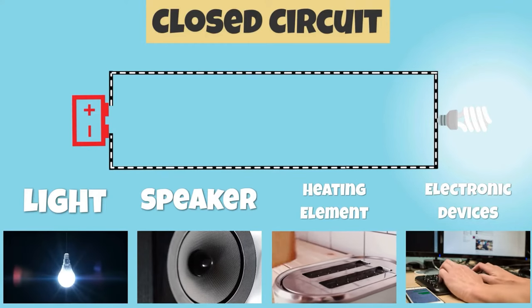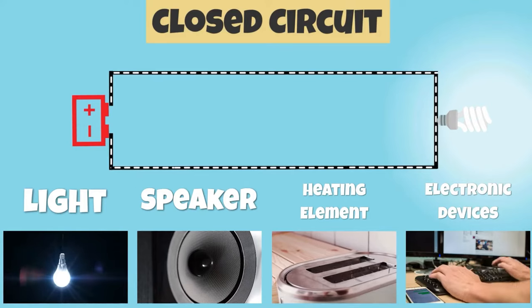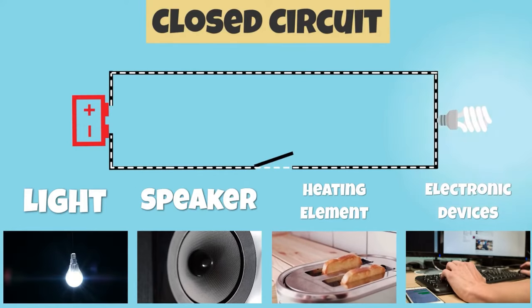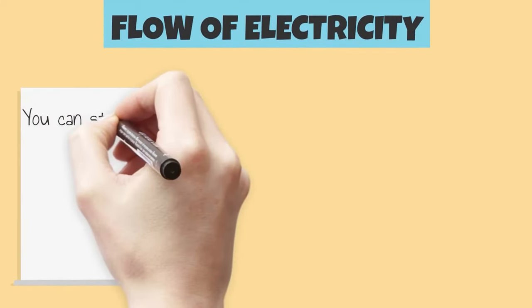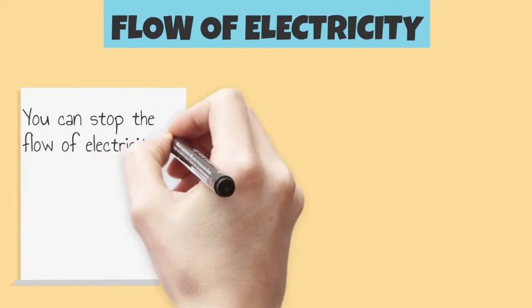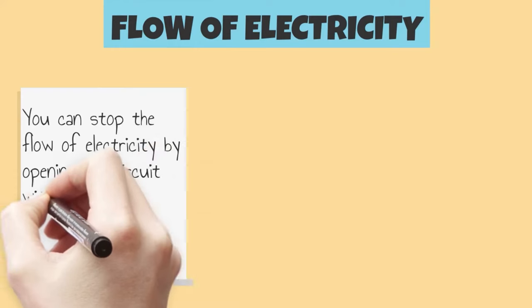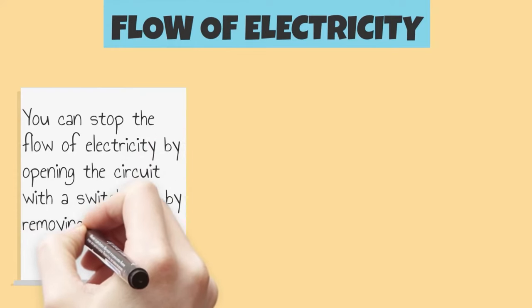Electrical energy continuously flows through this path and stops only when a circuit is broken or opened. You can stop the flow of electricity by opening the circuit with a switch and by removing the conductor.